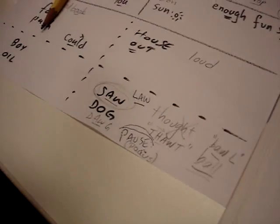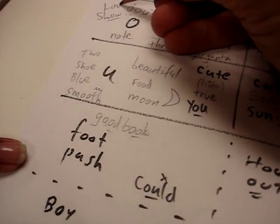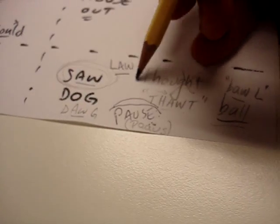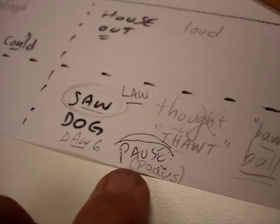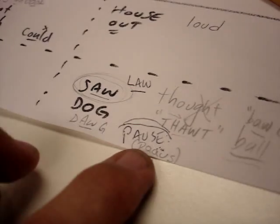We want to practice the difference between 'law' and 'low.' Over here it's the 'aw' sound — law, law. I saw the dog pause. You see the words: saw, dog, law, pause — all with the 'aw' sound.